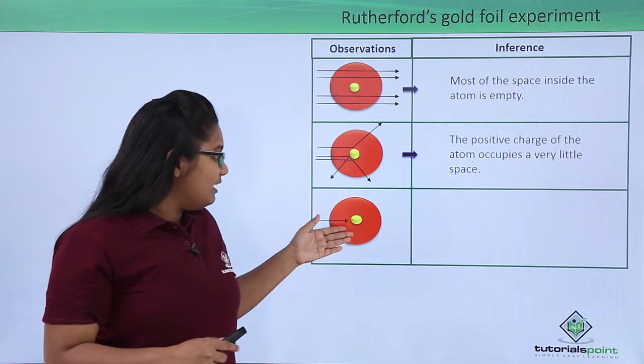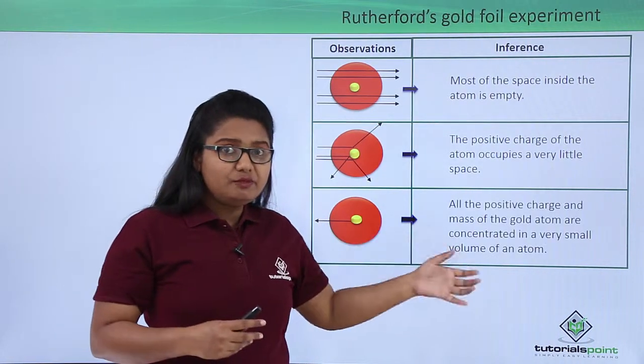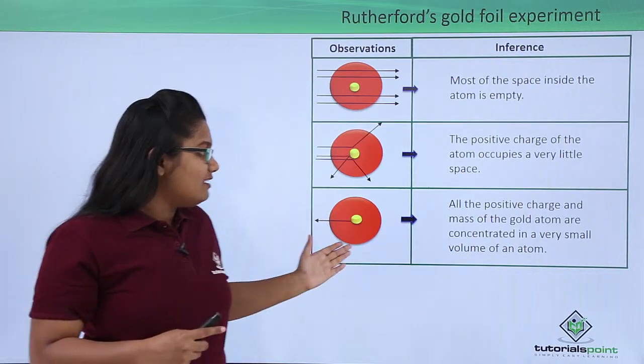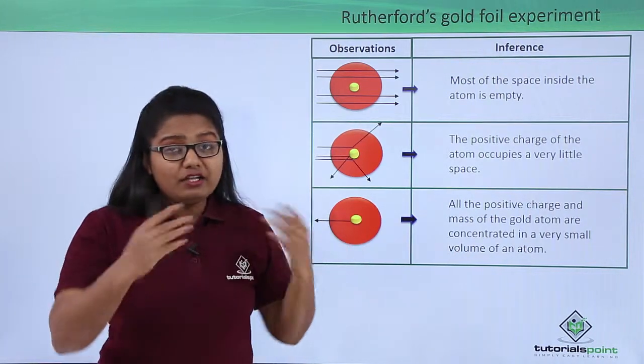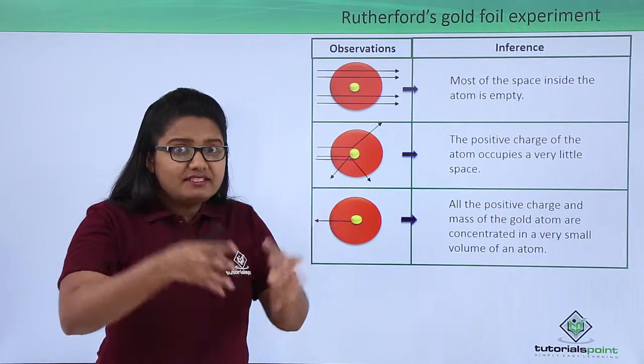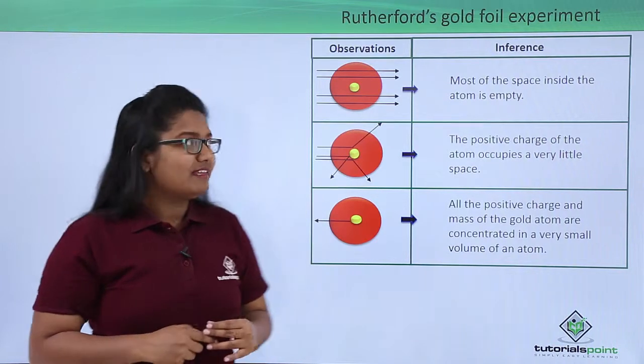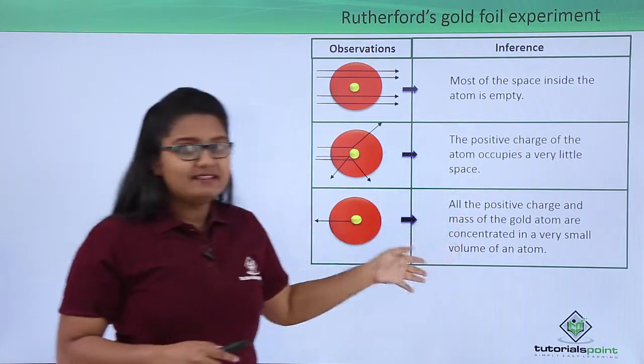The third observation was that very few particles seemed to retrace their path, and from this he inferred that all the positive charge and mass of an atom is concentrated into a very small volume inside the atom. These were the three inferences.